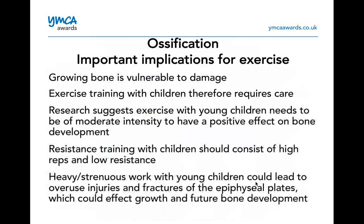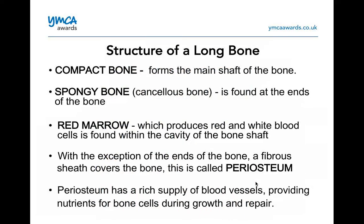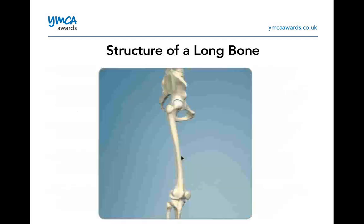Periosteum has a rich supply of blood vessels, providing nutrients for the bone cells during growth and repair. It goes on the outside — it is in your books, so you should have a picture of it there. You may get questions that come up on periosteum, so the highlighted words are important to remember. That gives you an example — a long bone you should know is the femur.